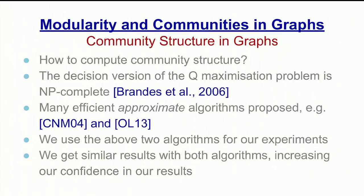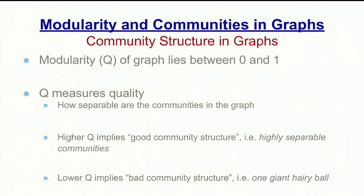How do we compute the community structure for a graph? The decision version of the algorithm is NP-complete, but there are many approximate algorithms that have been proposed — for example, the Clauset-Newman-Moore method and the online community detection algorithm. We use both in our experiments and get similar results with both, which has increased our confidence. The modularity or Q factor of a graph lies between zero and one and measures the quality of the communities — how separable they are. A higher Q implies a good community structure with highly separable communities, whereas a lower Q implies a bad community structure, the giant hairy mess we saw.